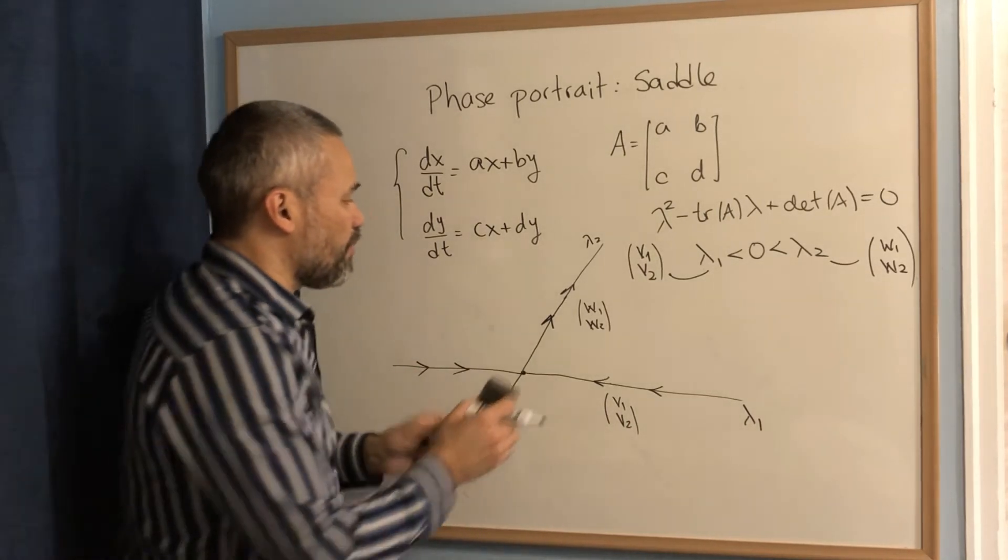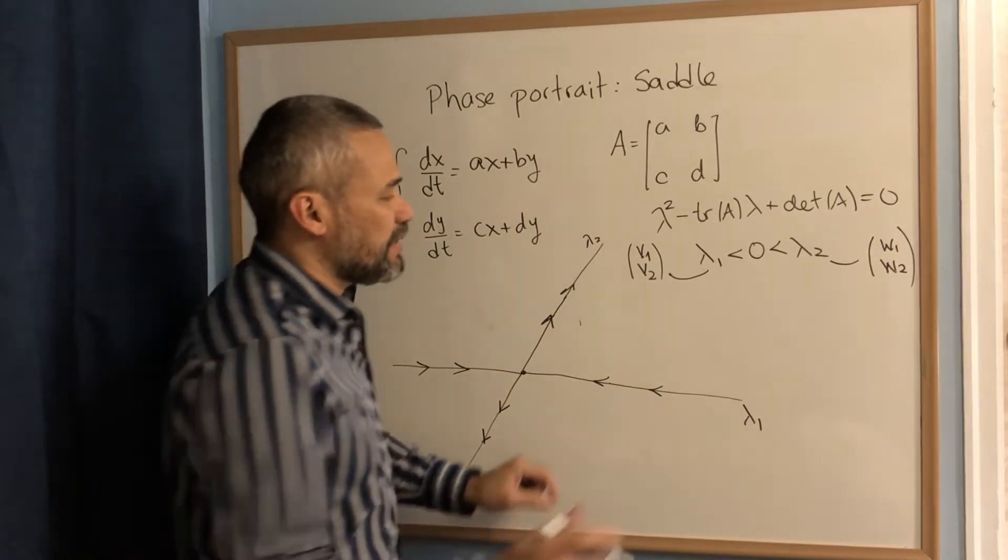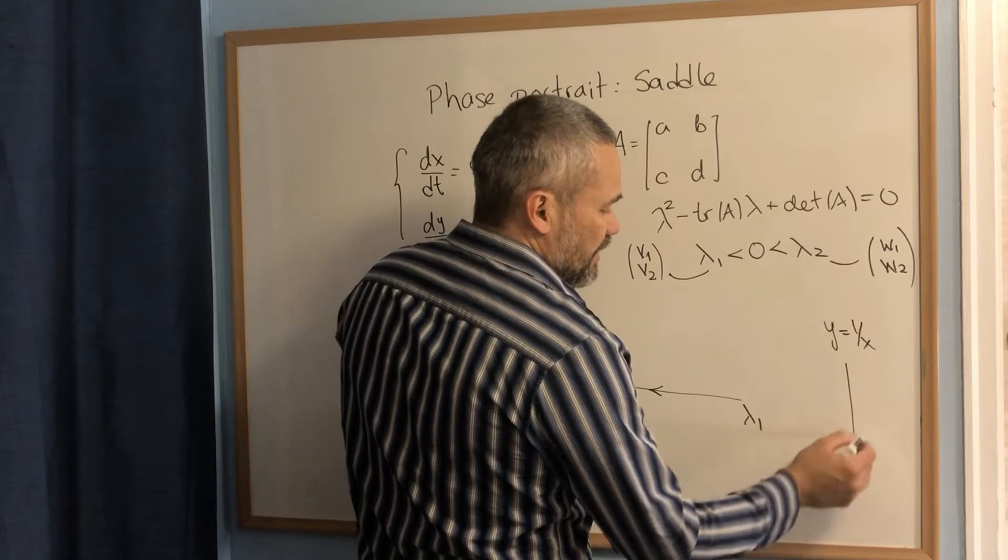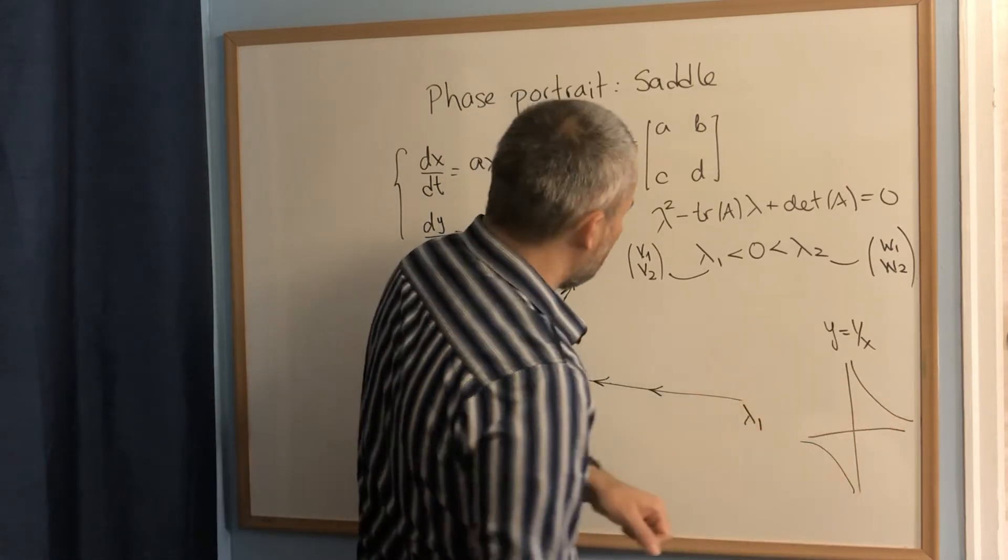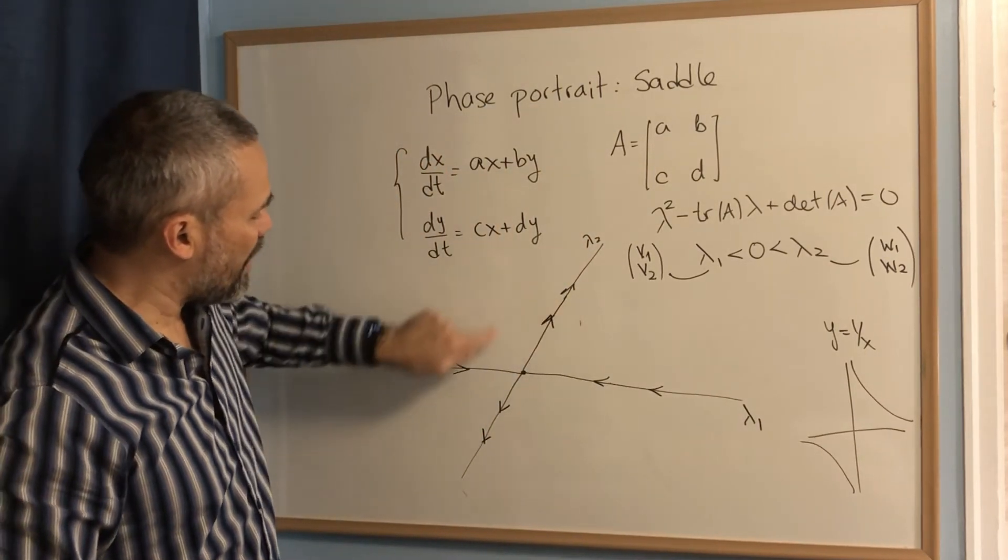Then the other orbits, they look like a hyperbola. Remember that the hyperbola is like the graph of the function one over x. It's something that goes like this. It has two asymptotes here. But what we need to do here is we need to think of this as the four quadrants.